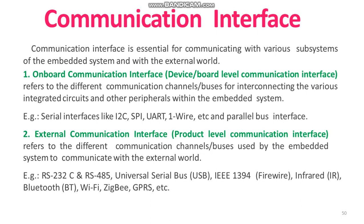For an embedded product, the communication interface can be viewed in two different perspectives. The first one is onboard communication interface. The second one is external communication interface. Onboard communication interface refers to the different communication channels for interconnecting the various integrated circuits and other peripherals within the embedded system. External communication interface refers to the different communication channels used by the embedded system to communicate with the external world.